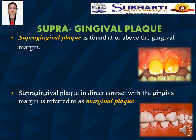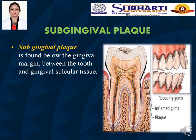Supragingival plaque is the plaque found at or above the gingival margin. Marginal plaque is the supragingival plaque which comes in direct contact with the gingival margin. Subgingival plaque, as the name suggests, is found below the gingival margin between the tooth and the gingival sulcular tissue. In the diagram, the arrow represents the subgingival plaque found between the gingival sulcular tissue and the tooth.